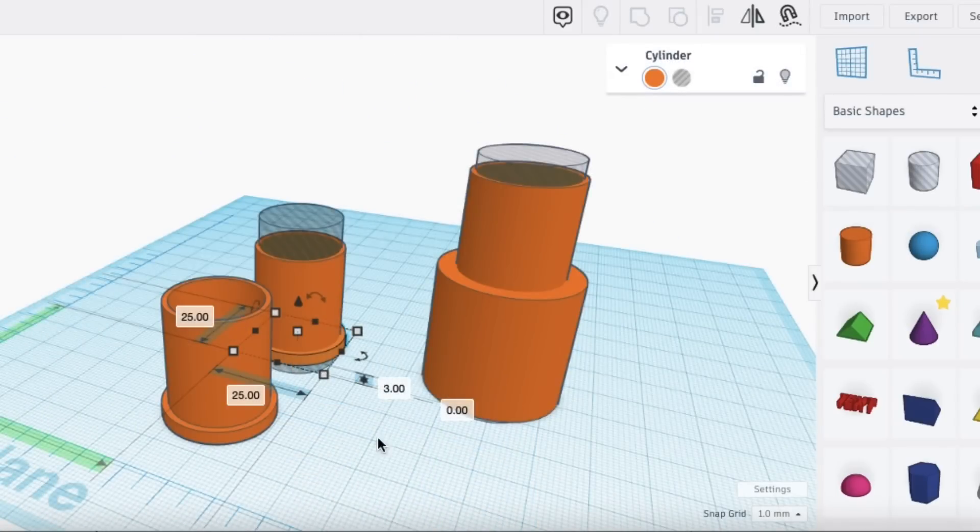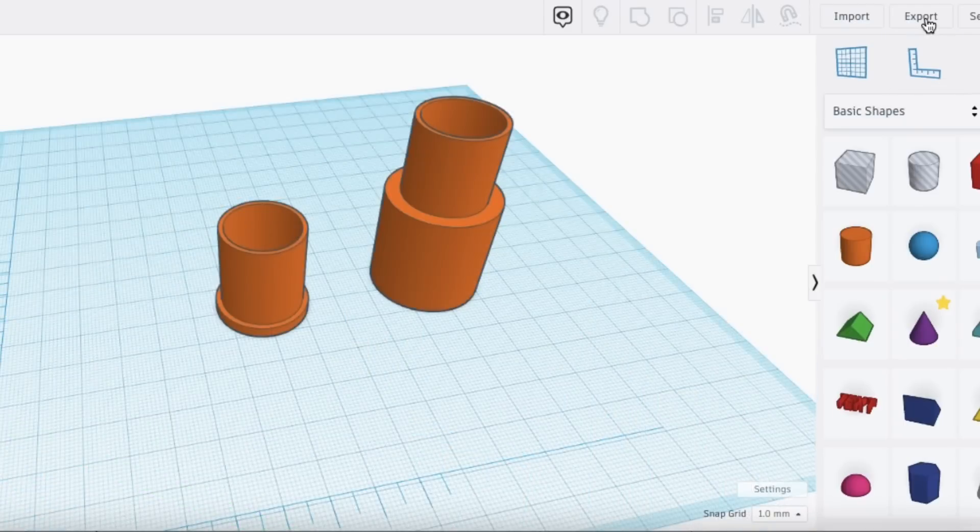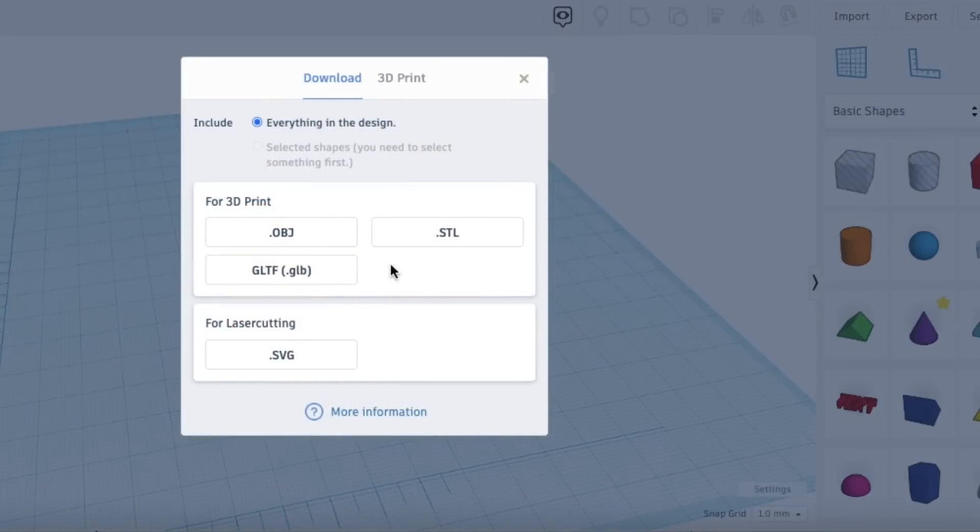To lift the fence panels off the ground I'm going to change the bottom insert from a 3 millimeter base to 30 millimeters base to lift it up. So now I can take these two files, export them as STL files and print them.